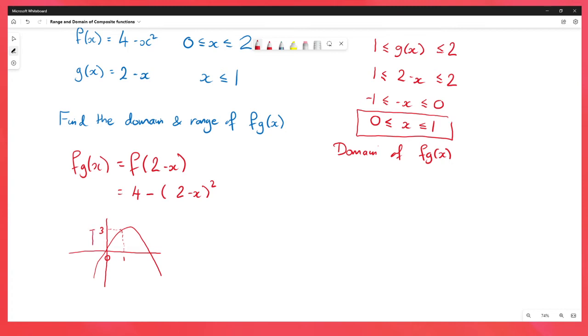So the range is going to be that fg of x needs to be between 0 and 3. And that's how you find the domain and range of a composite function. I'm going to do the same example again, but going for a slightly more abstract method that means you don't actually need to work out the function itself.